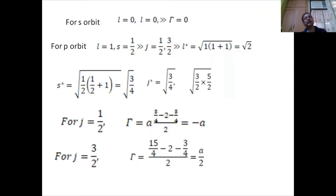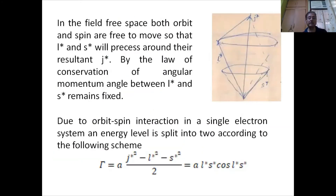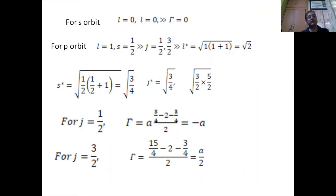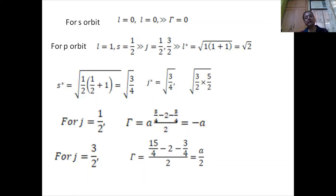For the S orbit, l equals zero, so j* is the same as s*, and gamma equals zero. For the P orbit, l equals 1 and s equals one-half, so j equals l+1/2 = 3/2 and l−1/2 = 1/2. Then l* equals √(1×2) = √2, s* equals √(3/4), j* for j=1/2 equals √(3/4), and j* for j=3/2 equals √(15/4).